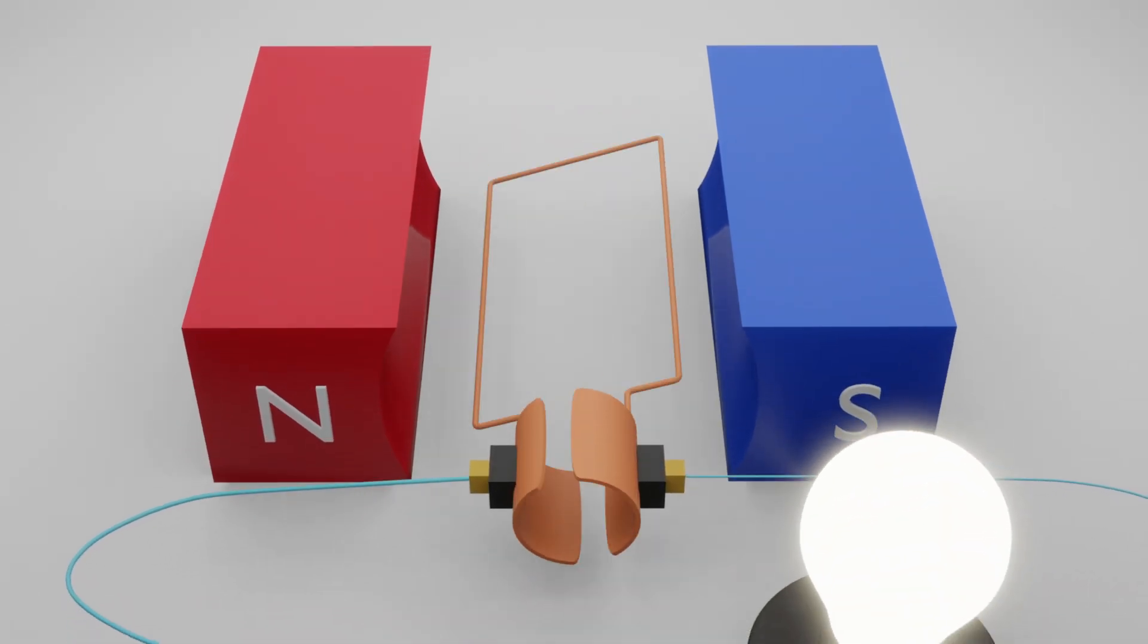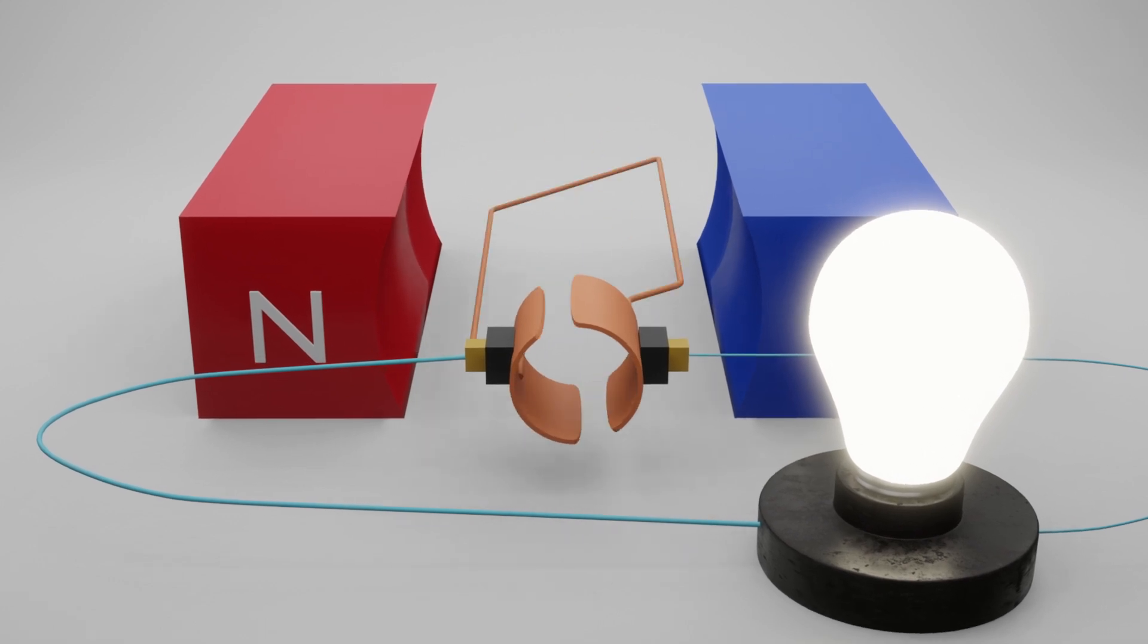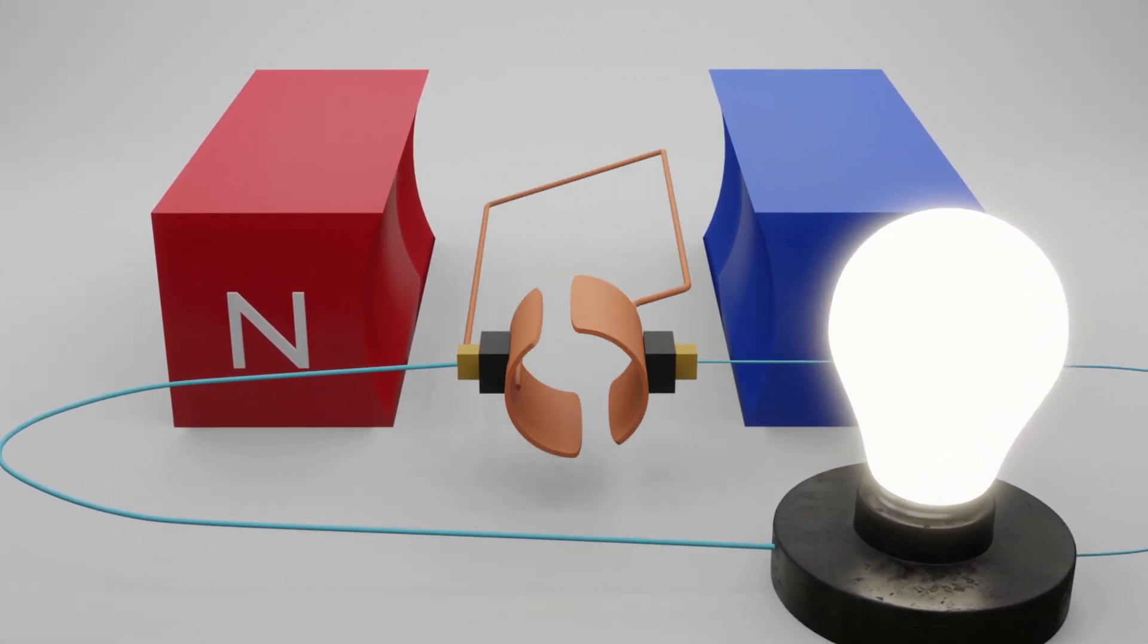DC shunt generators are fascinating machines that rely on a delicate interplay between magnetism and electricity to generate power. At the heart of their operation lies the concept of electromagnetic induction, a phenomenon discovered by the brilliant Michael Faraday. In simple terms, when a conductor moves through a magnetic field, an electric current is induced in the conductor. A DC shunt generator utilizes this principle by spinning a coil of wire, known as the armature, within a magnetic field created by stationary electromagnets called field windings.